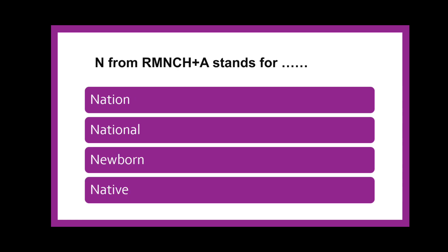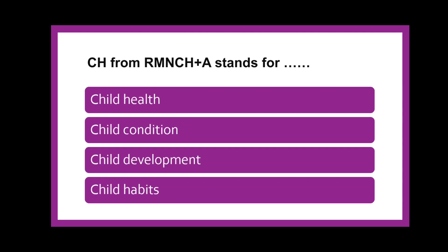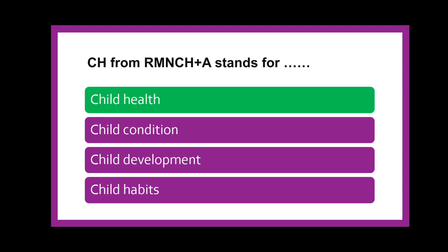Next: N from RMNCH+A stands for dash — Nation, National, Newborn, or Native? The correct answer is Newborn. Next: CH from RMNCH+A stands for dash — Child Health, Child Condition, Child Development, or Child Habits? The correct answer is Child Health.